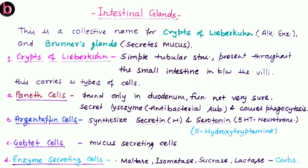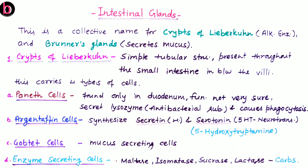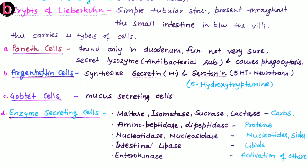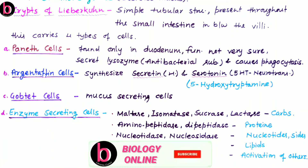The second cell type is argentaffin cells, which synthesize secretin hormone along with serotonin. Serotonin is a neurotransmitter, also known as 5-HT (5-hydroxytryptamine). The third cell type is goblet cells, responsible for secretion of mucus, which helps in lubrication and easy passage of food material in the intestine.